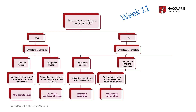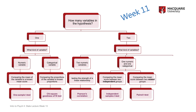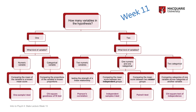If you want to test whether a numeric variable varies between two different groups or categories — so one numeric and one categorical variable — then if the groups are independent and not related, it's going to be the independent samples t-test. If they're related groups, either related people or the same people measured at two time points, then it's going to be a paired t-test. Finally, if you have two categorical variables and want to see if there's a relationship between them, the test is the chi-square test of independence.